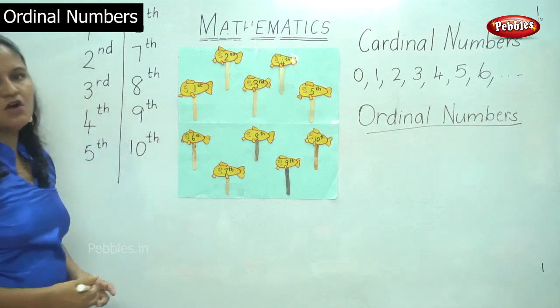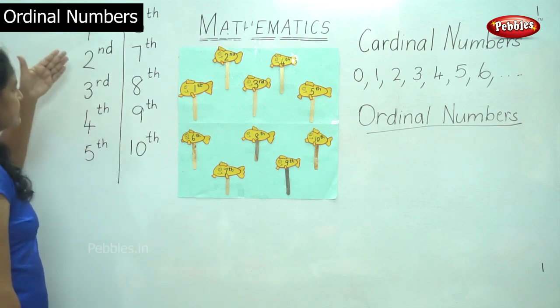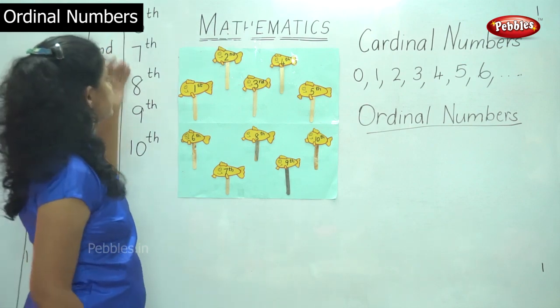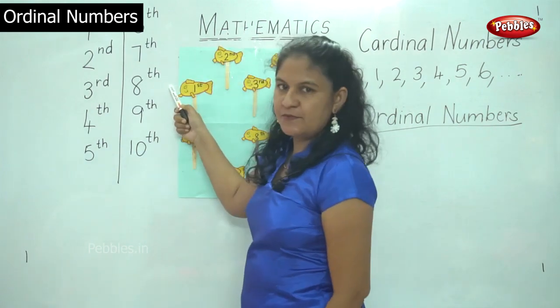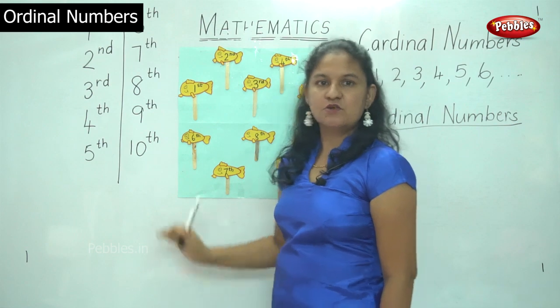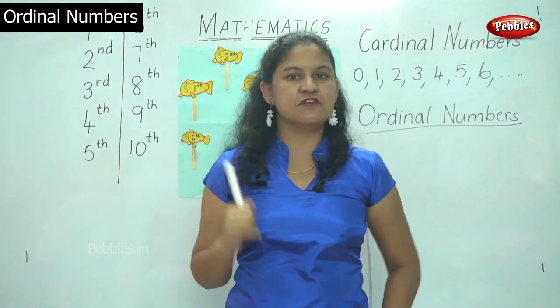So this is our ordinal numbers. So we say it is in the first place, second place, third place, fourth place, fifth place, sixth place, seventh place, eighth place, ninth place and tenth place. So we use ordinal numbers when we have to put them in different positions.